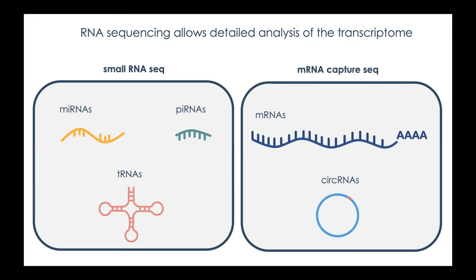These biofluids are analyzed using two complementary RNA sequencing procedures. One is small RNA sequencing — I will not talk about that today, just refer to the manuscript. The other is mRNA capture sequencing, which uses biotinylated probes to capture protein-coding exons. As a bonus on top of the messenger RNAs, you also get circular RNAs, which I'll briefly discuss near the end.